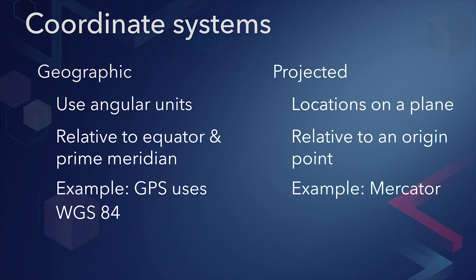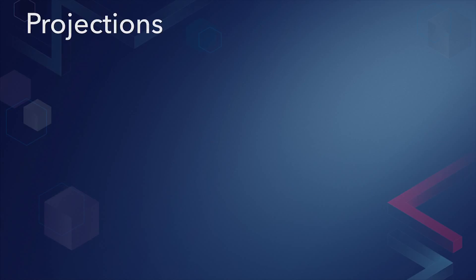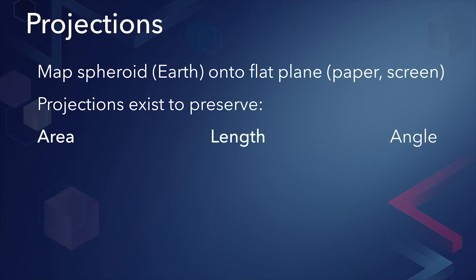Mercator is an example of a projected coordinate system. Different projections exist for different purposes, such as preserving area, length, or angle.